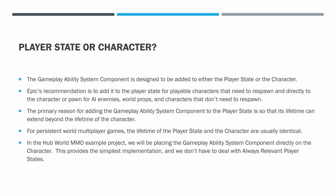The primary reason for adding the gameplay ability system component to the player state is so that its lifetime can extend beyond the lifetime of the character. For persistent world multiplayer games like what we build, the lifetime of the player state and the character are usually identical. In the Hubworld MMO Example Project, we will be placing the gameplay ability system component directly on the character. This provides the simplest implementation and we don't have to deal with the always-relevant player state problem. We're building persistent world multiplayer games, which are quite different than deathmatch, MOBA, or survival games. In persistent world multiplayer games, there isn't the concept of a respawn, so we use Epic's recommendation to add the gameplay ability system component directly to the character.